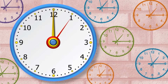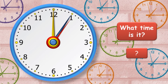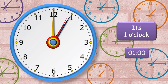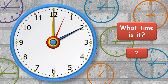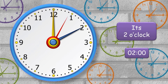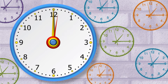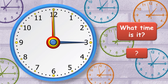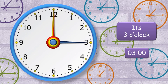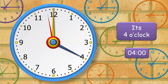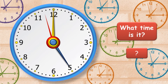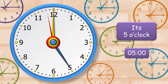Let's revise. What time is it? It's one o'clock. What time is it? It's two o'clock. What time is it? It's three o'clock. What time is it? It's four o'clock. What time is it? It's five o'clock.